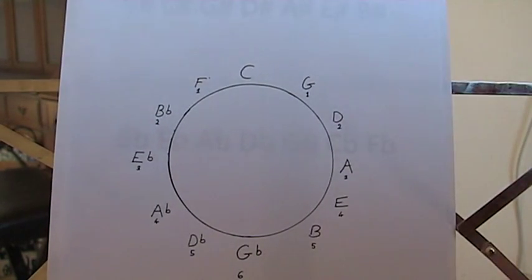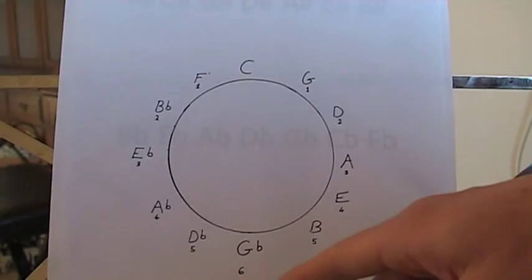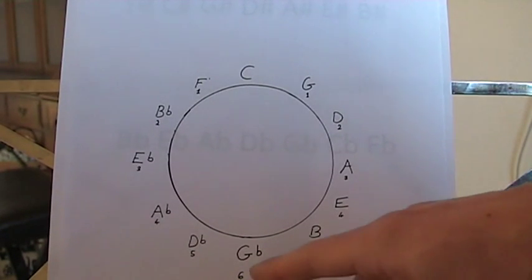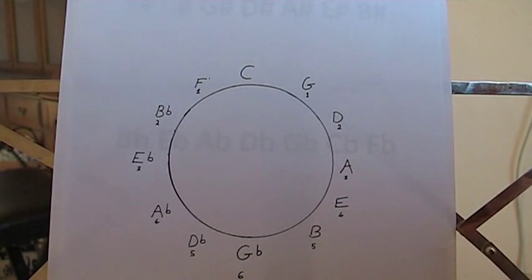Now, if we go to the flats, let's say it's G flat, so you've got six. So the order of flats is B, E, A, D, G, C.